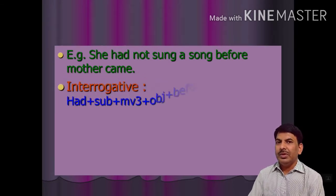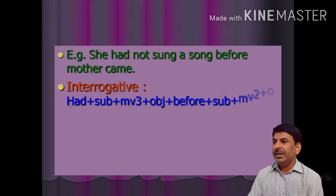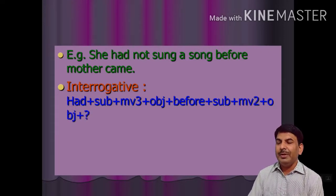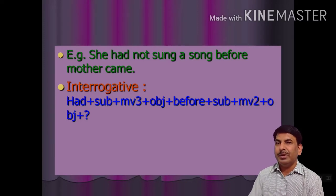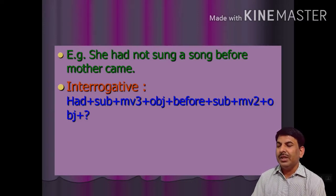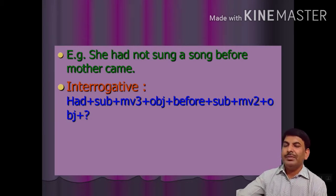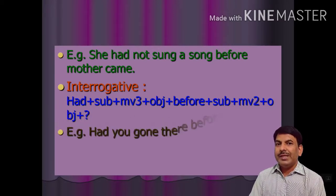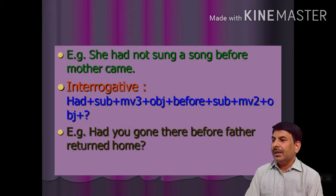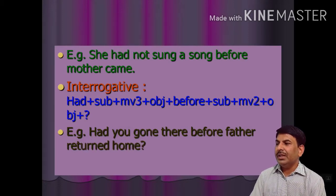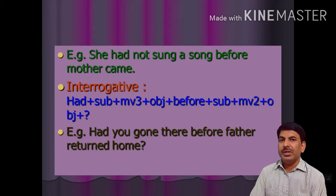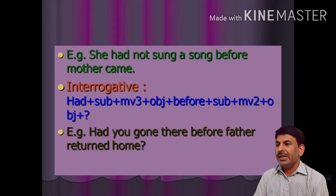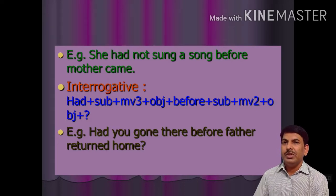The third rule is for interrogative sentences. In interrogative, the sentence begins with the helping verb: had + subject + third form of the main verb + object + before + subject + second form of the main verb + object + question mark. For example: 'Had you gone there before father returned home?' The first clause belongs to past perfect tense and the second belongs to simple past tense.